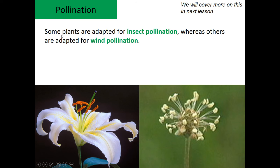A lot of plants are adapted for insect pollination and some are adapted for wind pollination. Looking at these two flowers here, hopefully you know which one is which. This is obviously insect pollination because it's got a nice flower to attract the insects, and this is wind pollination. We're going to talk about how and why the flowers are different in a moment.